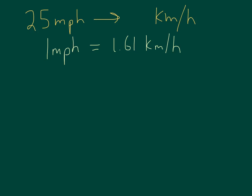So what I'm going to do is rewrite 25 miles per hour, and I'm going to multiply that by a fraction. And the fraction is 1.61 kilometers per hour over one mile per hour.